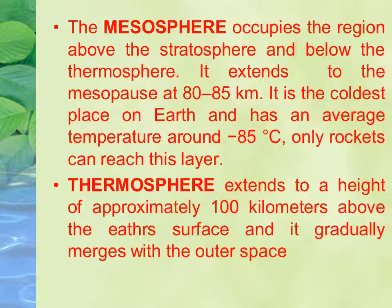The third layer is the mesosphere, which extends above the stratosphere up to about 80 to 85 km from the surface. It is the coldest layer, with temperatures going down to around minus 85 degrees. Rockets are used to reach this layer. The next layer is the thermosphere, which goes up to approximately 100 km and slowly merges into space.